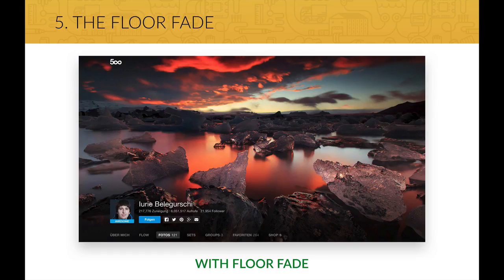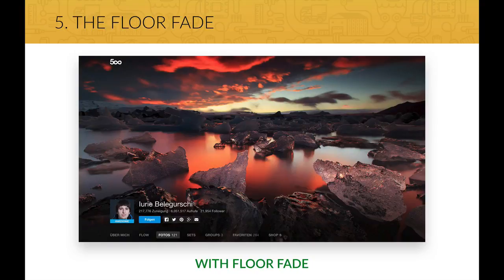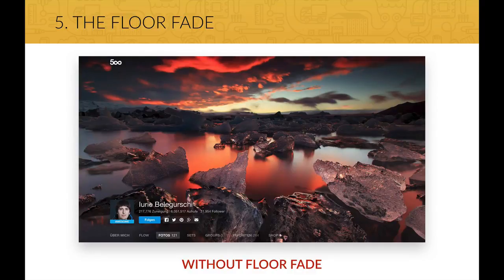The last method I want to show you is the so-called floor fade. The floor fade is a technique where an image subtly fades towards black at the bottom, with white text written over it. This is the profile page of 500px.com, and it uses the floor fade extremely well — it is almost unnoticeable, but still improving readability, which is exactly what we want. Without the floor fade, we have a hard time reading some of the small white text at the bottom. So the floor fade increases text readability dramatically.